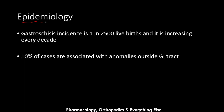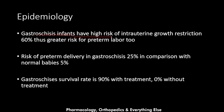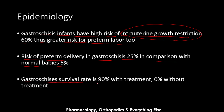Now let's talk about the epidemiology of gastroschisis. The incidence is 1 in 2,500 live births, and it is increasing every decade. Ten percent of cases are associated with anomalies outside the gastrointestinal tract. Gastroschisis infants have a high risk of intrauterine growth restriction — 60% have it — giving them a greater risk for preterm labor: 25% versus 5% in normal babies. The survival rate is 90% with treatment and 0% without treatment.